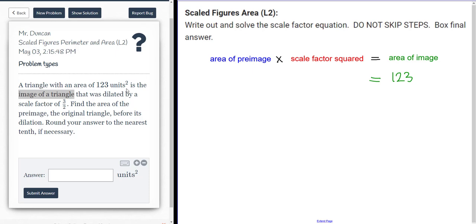It states that it was dilated by a scale factor of 3 halves. So over here, where it says scale factor, I'm going to go ahead and write 3 over 2. Again, but remember when we're dealing with area, it's length times width. That's two dimensions. So it's 3 over 2 squared.